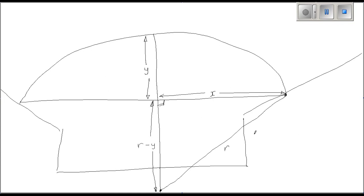And we get to use Pythagoras to solve. So we've got, if we use Pythagoras, it's R squared equals X squared plus R minus Y squared.